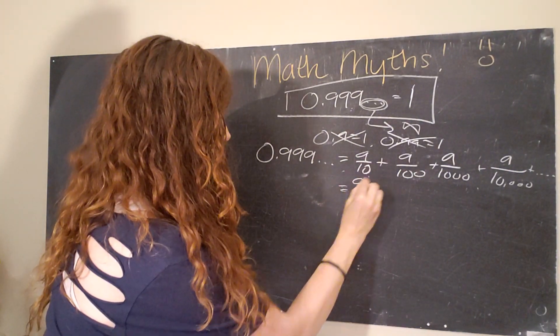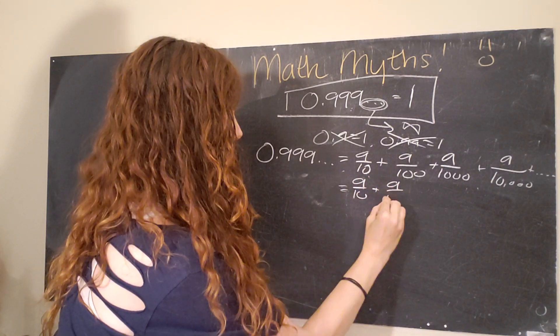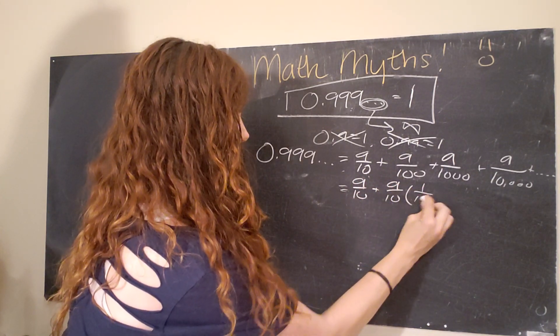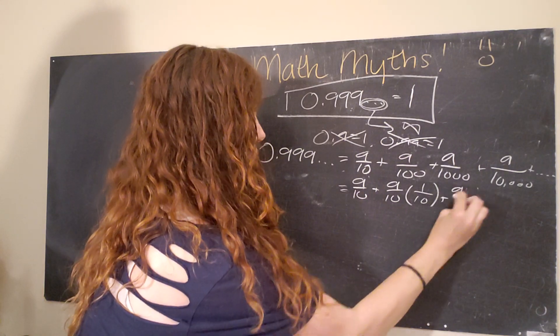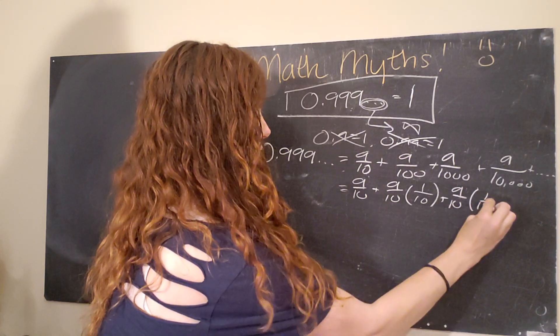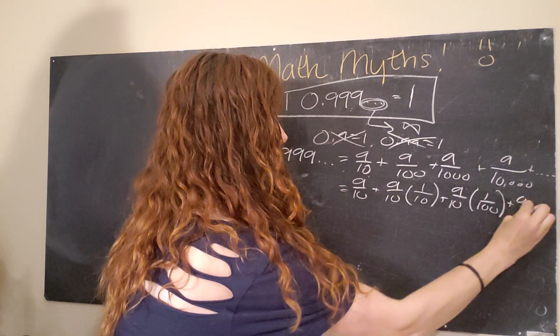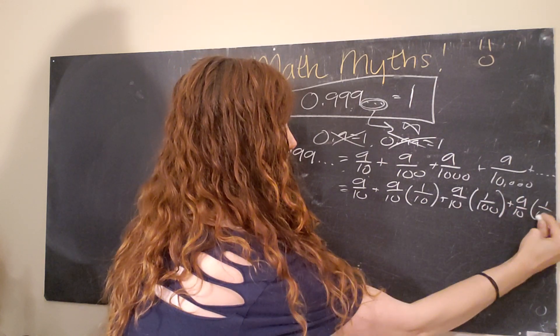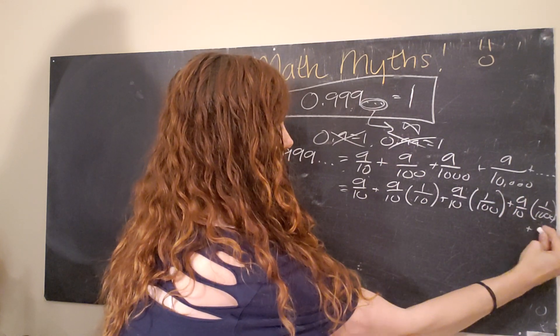I'm going to erase these because you hopefully can see why that is true. And then so we're going to get 9 over 10 plus 9 over 10 times 1 over 10 plus 9 over 10 times 1 over 100 plus 9 over 10 times 1 over 1,000, running out of space, plus dot dot dot.